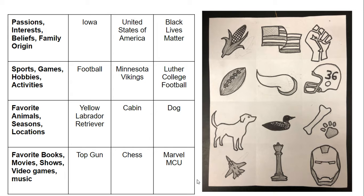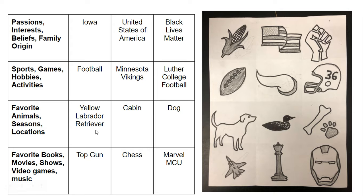Here are some of my ideas. For me, I'm originally from Iowa — that focuses on my family of origin. So you could do the boundary of a state, a flag; I drew a piece of corn. I'm also from the United States of America, proud to be an American, so I have the American flag. I'm also very passionate about equality, so I have a fist here to represent Black Lives Matter. Some things I enjoy are football, watching the Minnesota Vikings, and where I went to college, Luther College. I also have several yellow labs as pets, so I drew the dog. I enjoy spending time at the cabin, which I represented as a loon. And I also wanted to show my passion for dogs in another way besides just drawing the dog itself, so I did a bone and a paw print.